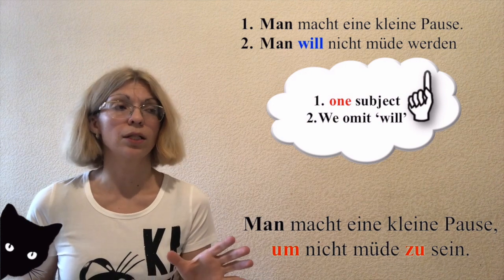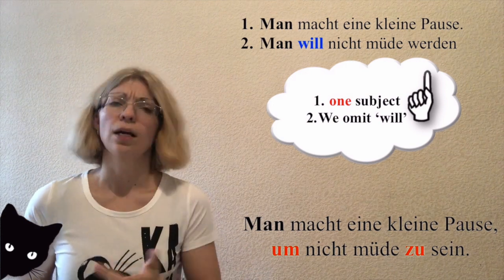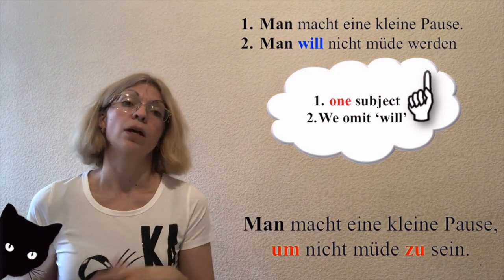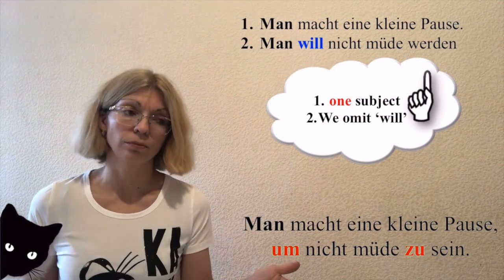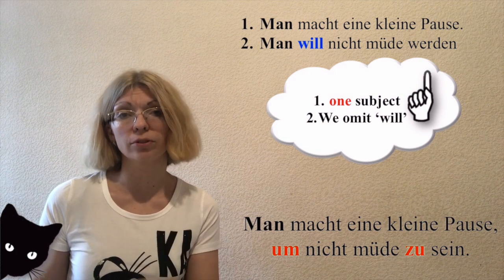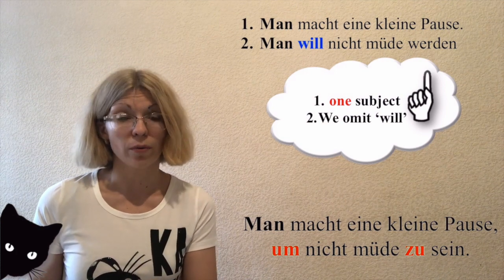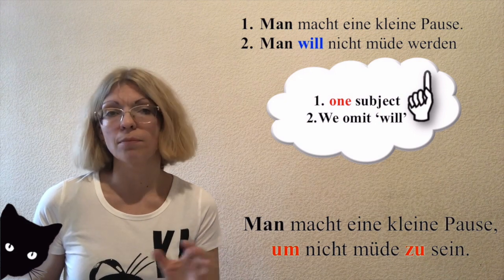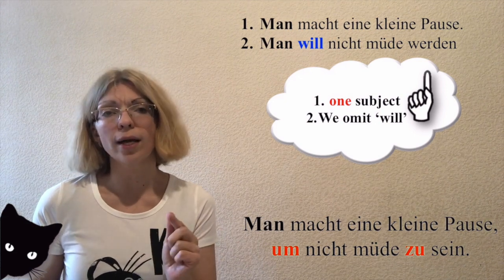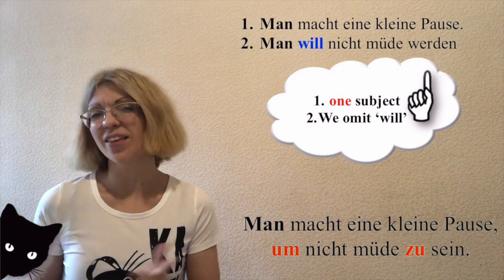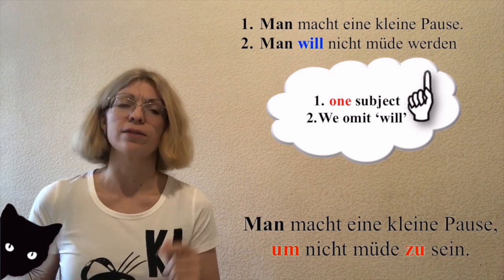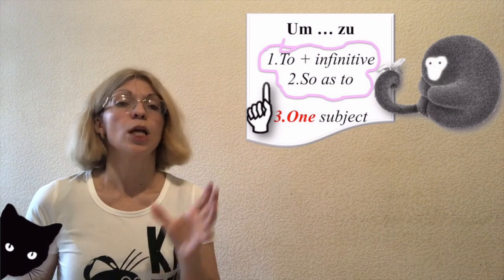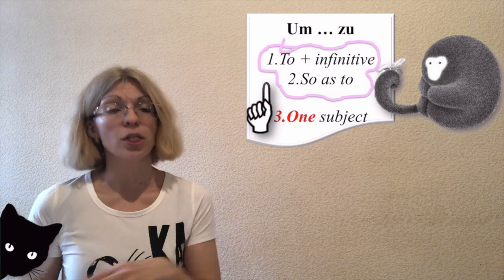Next example: 'Man macht eine kleine Pause. Man will nicht müde werden.' Pay attention — there is 'will' in the subordinated clause. Remember, we can't use 'wollen' in the subordinated clause, so we omit it. Result: 'Man macht eine kleine Pause, um nicht müde zu werden.' I think that's very easy.